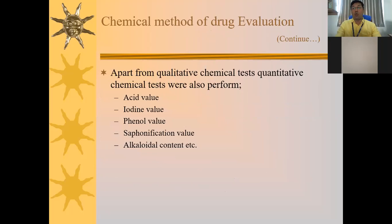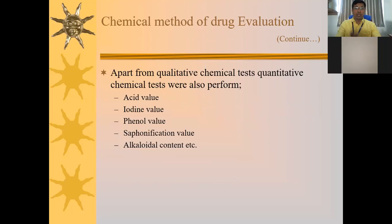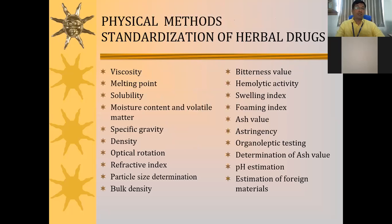Apart from qualitative chemical tests, quantitative chemical tests are also performed, such as acid value, iodine value, phenol value, saponification value, and alkaloidal content. These are universally stable constants for the respective crude drugs, and with the help of these tests one can also identify crude drugs.